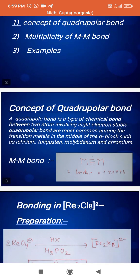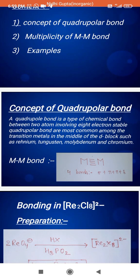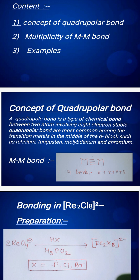A quadrupolar bond is a type of chemical bond between two atoms involving eight electrons. The most stable quadrupolar bonds are most common among transition metals in the middle of the d-block, such as rhenium, tungsten, molybdenum, and chromium. This means quadrupolar bond is a type of chemical bond where two metals form four bonds.